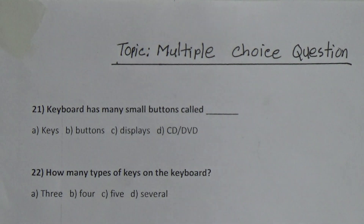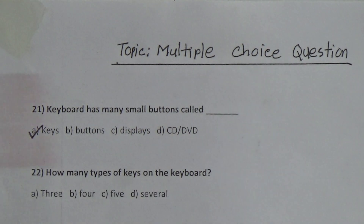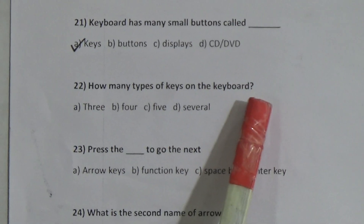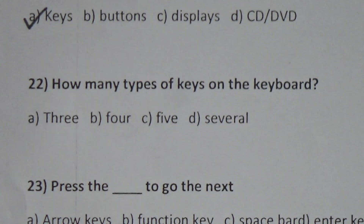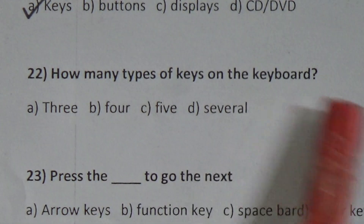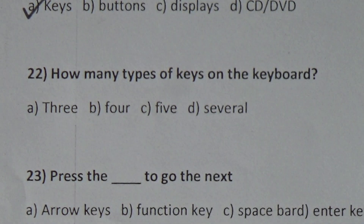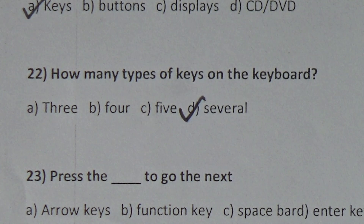Question 22: How many types of keys are on the keyboard? Options: 3, 4, 5, or several. The correct answer is D — several. There are several types of keys on the keyboard.